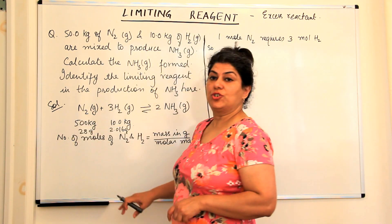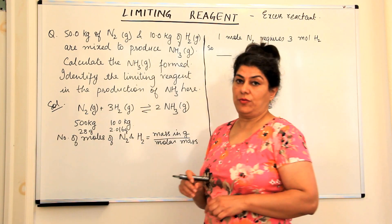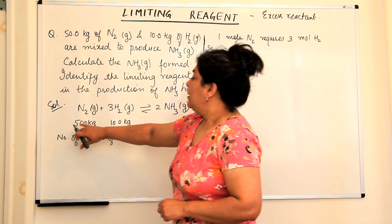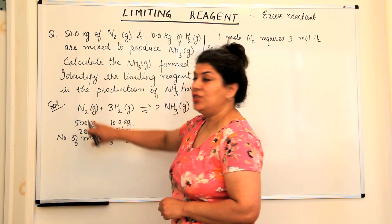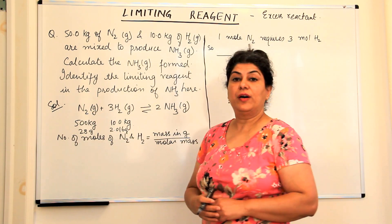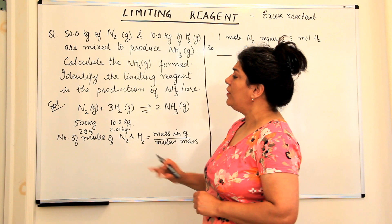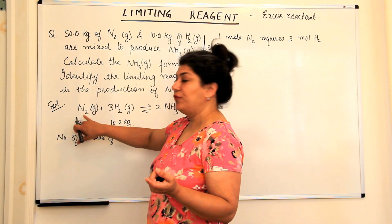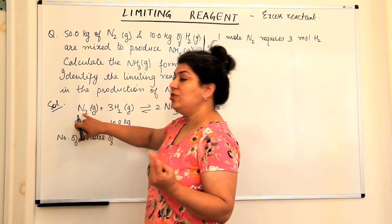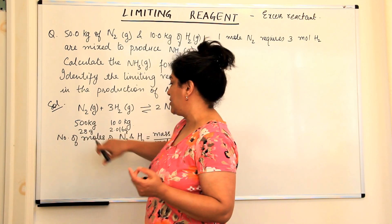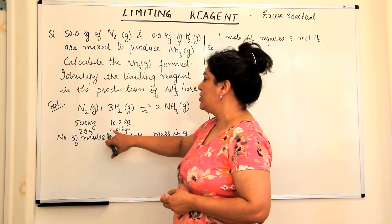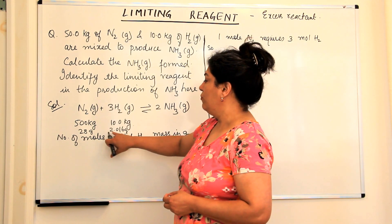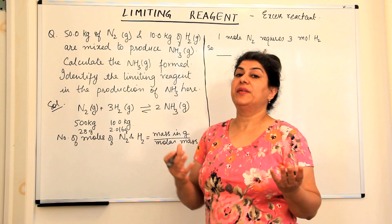One mole of nitrogen combines with three moles of hydrogen to produce two moles of ammonia. We have been given 50 kg of nitrogen and 10 kg of hydrogen. The molar mass of N₂ is 28 grams. For hydrogen, one hydrogen atom is 1.008, so H₂ would be 2.016 grams. We are talking of molar mass.